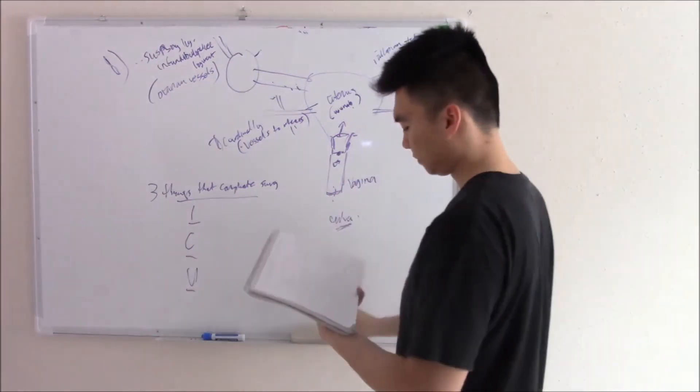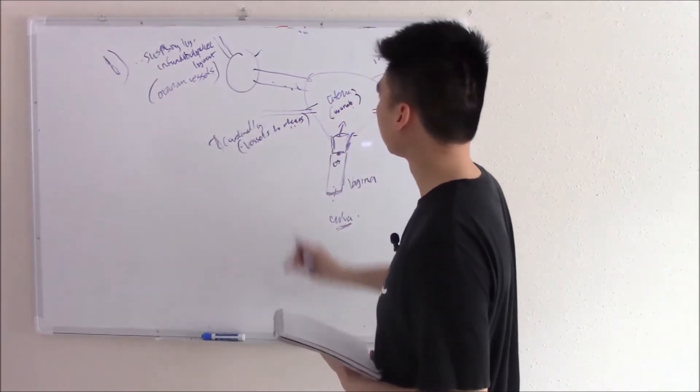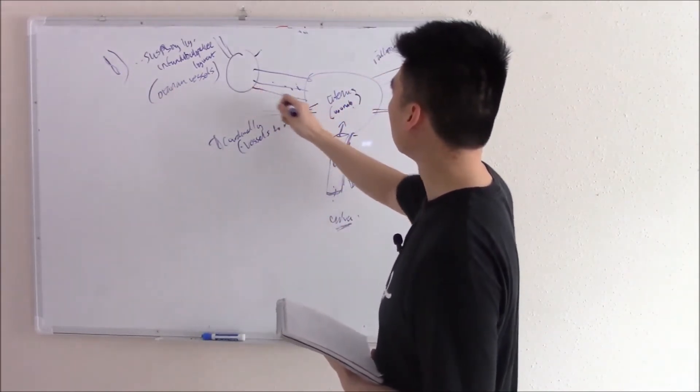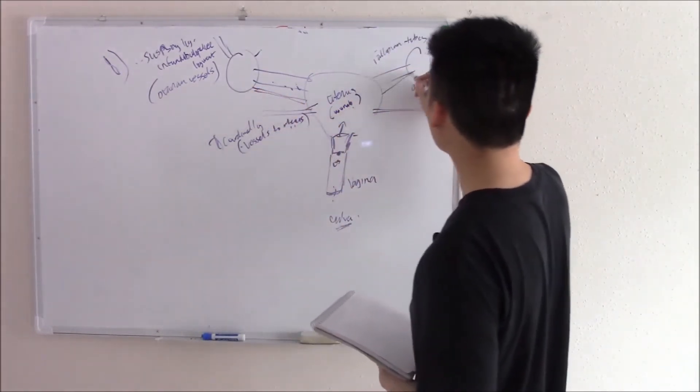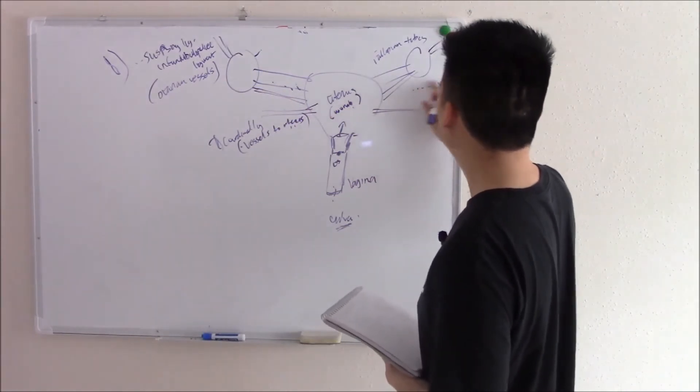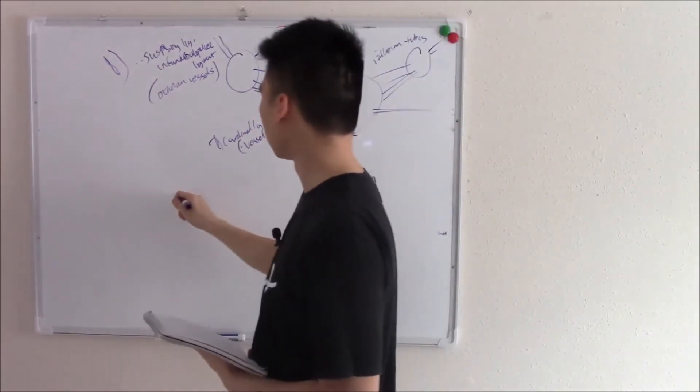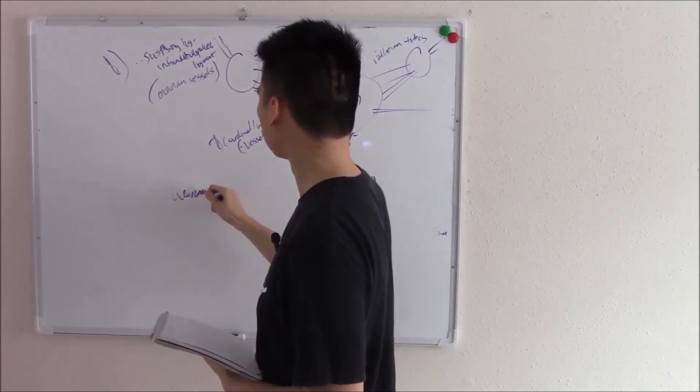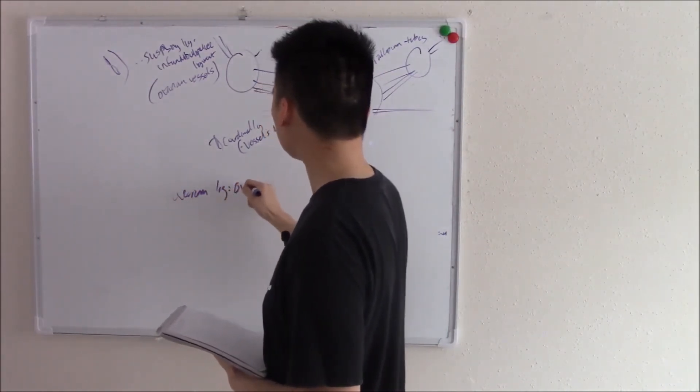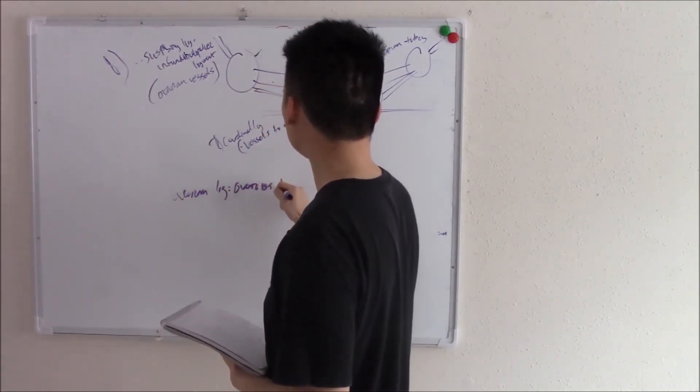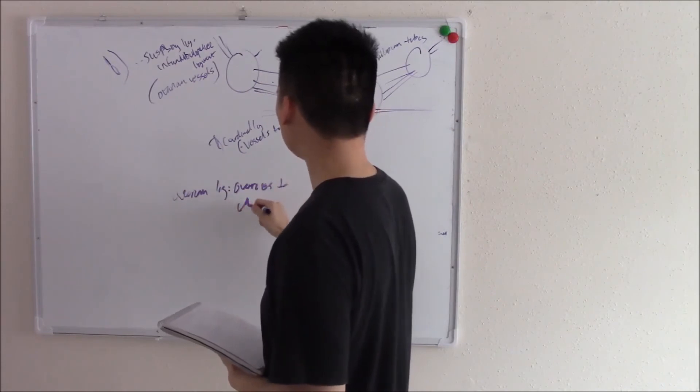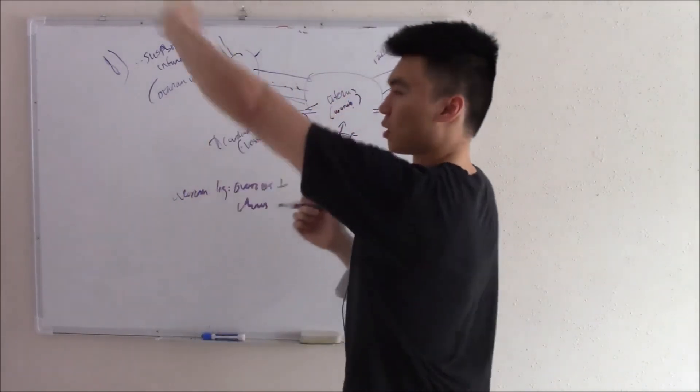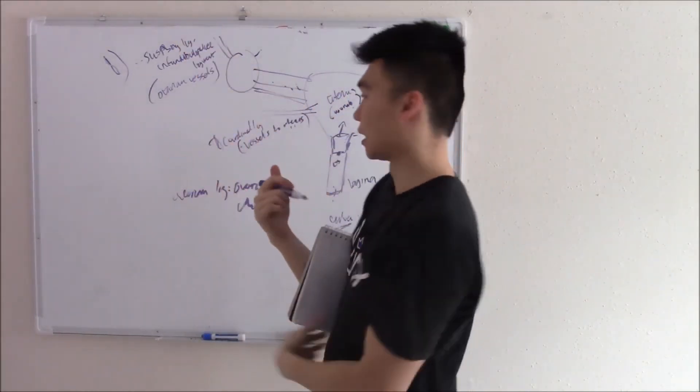Moving back on to ligaments, there's one more ligament that holds the ovary to the uterus. That's called your ovarian ligament. The ovarian ligament holds the ovaries to the uterus. That way it's pulled on one side and pulled on the other and it stays nicely in place.